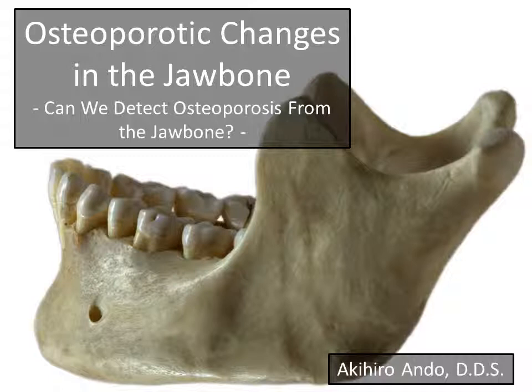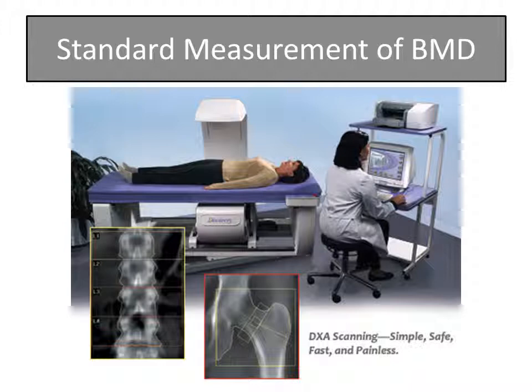More than 50% of fractures among postmenopausal women, including hip fractures, occur in this group with low bone density. So how do we measure bone mineral density? The gold standard today is DXA — Dual Energy X-ray Absorptiometry. This technique uses two X-ray energies to estimate the area of mineralized tissue; the mineral content is divided by the area and corrected for body size. It is usually performed on the lumbar spine and hip.